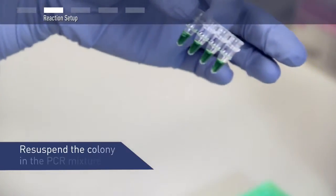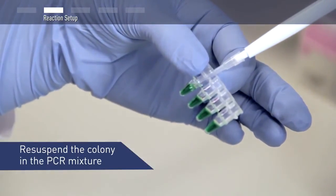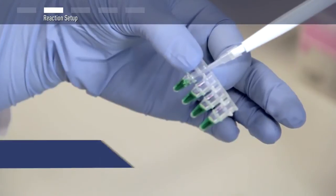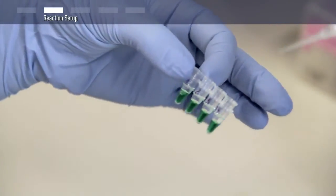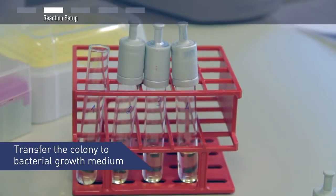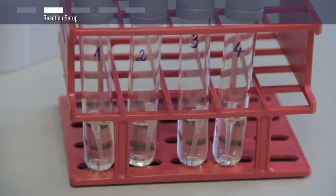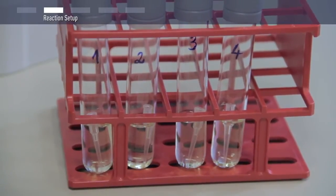Next, with the same tip, resuspend the colony in your one-time PCR Master Mix. In this step, bacterial cells are released into the PCR mixture. Finally, transfer the tip into a labeled culture tube containing bacterial growth medium to grow bacterial cells for DNA purification.